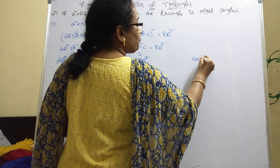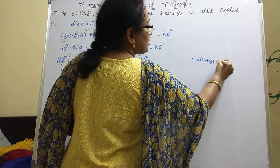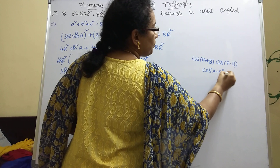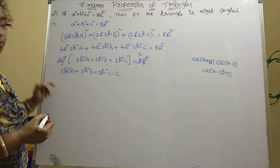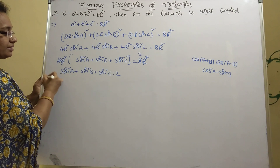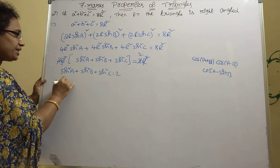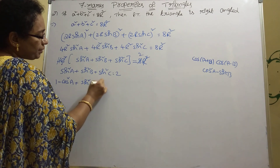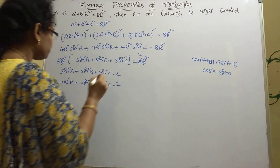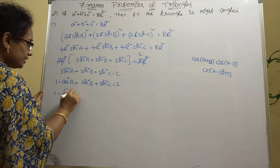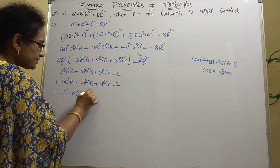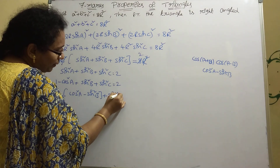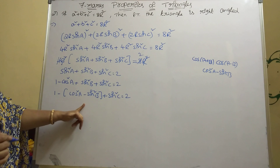Using the identity cos(A+B)·cos(A−B) = cos²A − sin²B, we convert sin²A as 1 − cos²A. So the equation becomes: (1 − cos²A) + sin²B + sin²C = 2. Taking −cos²A common, we get: −cos²A + sin²B + sin²C = 1.